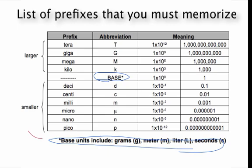If the quantity is small, you would use deci, centi, milli, micro, nano, and pico. If it is larger, you would consider using kilo, mega, giga, and tera.